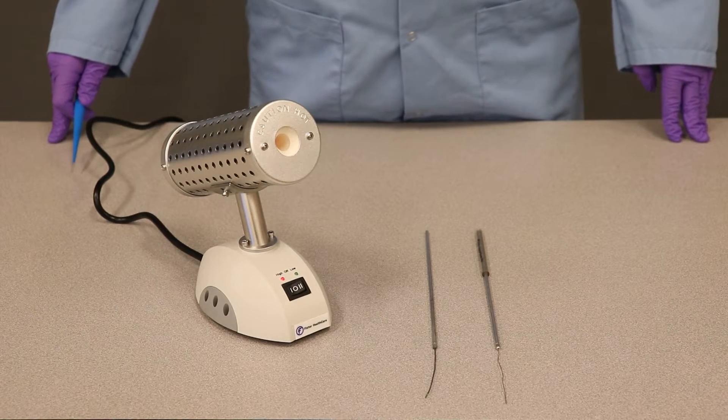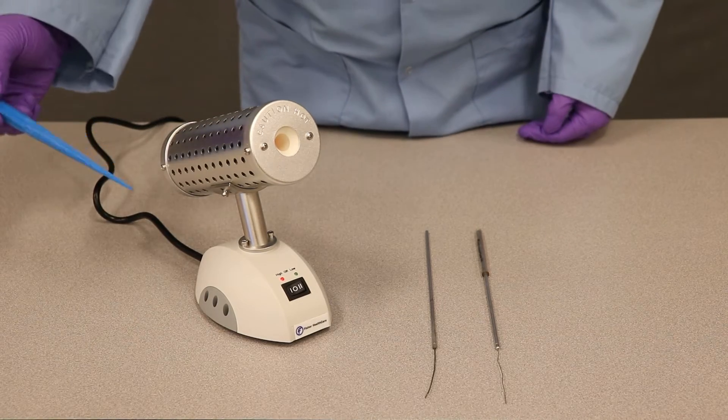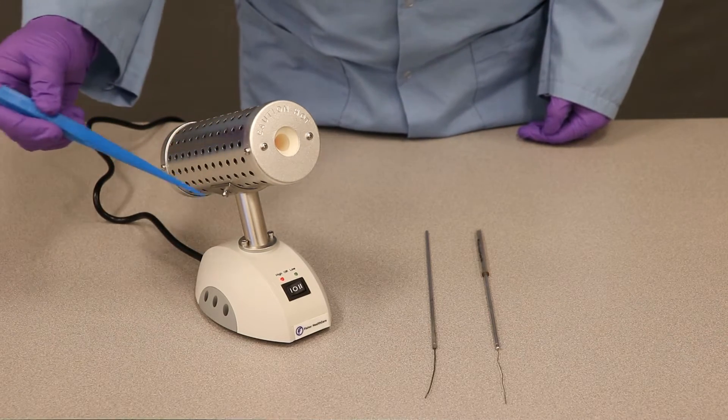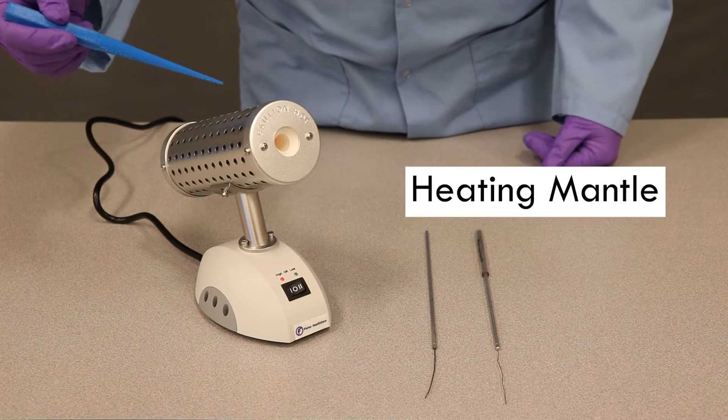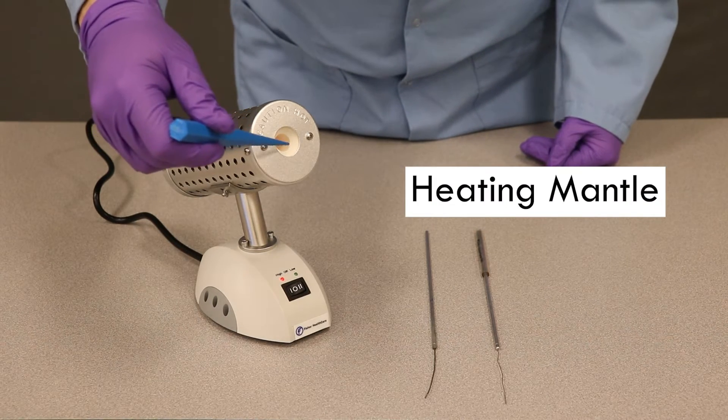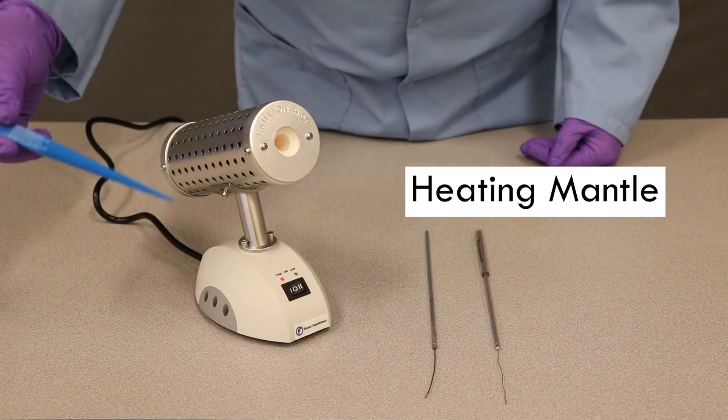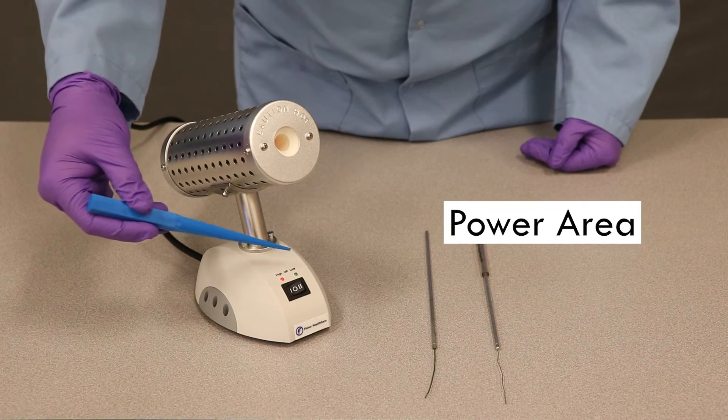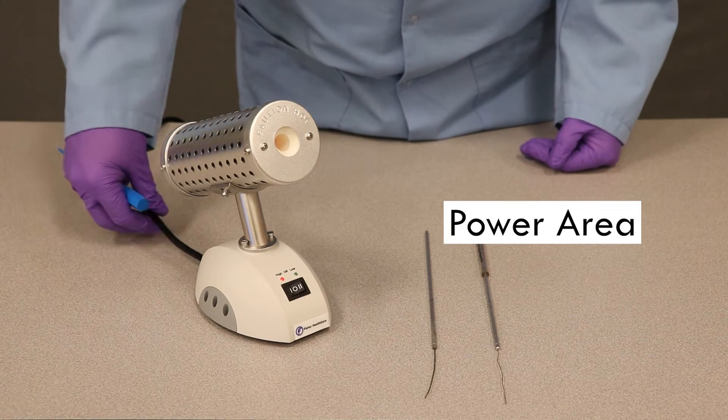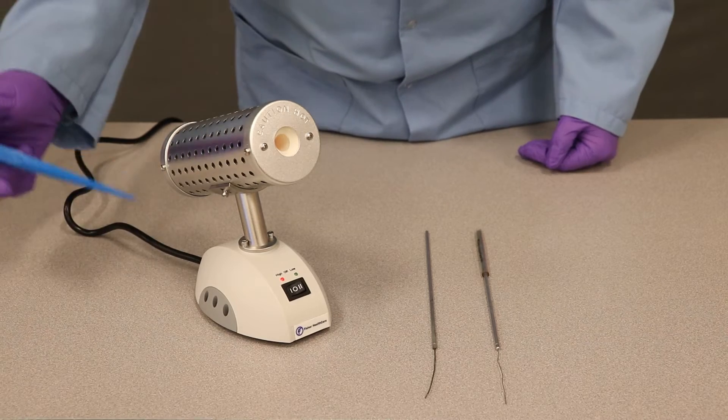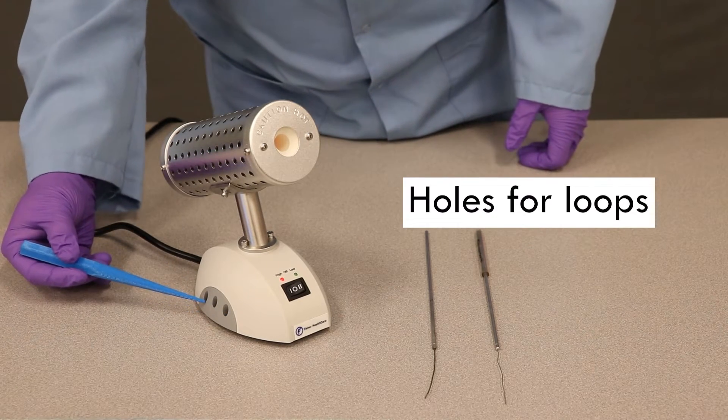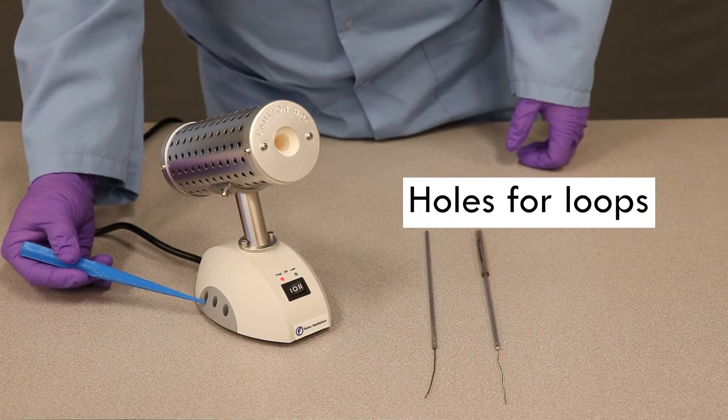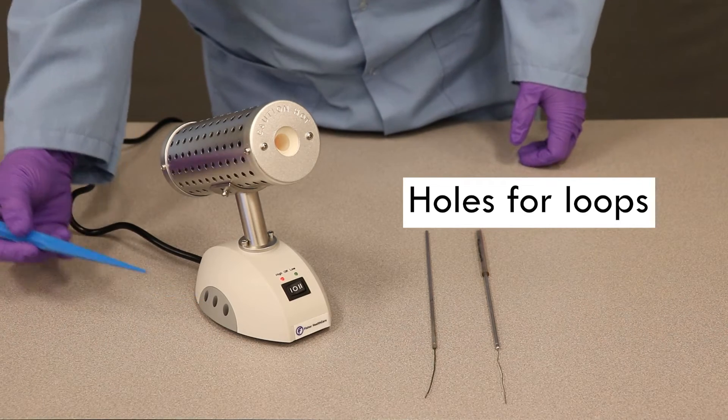The parts of the Bact incinerator are as follows. This long metal cylinder is known as the heating mantle. Inside is where you will actually be putting the loop. This is the power area with the on-off switch and the cord, and these are some small holes on the side that can be used to hold inoculating loops when not in use.